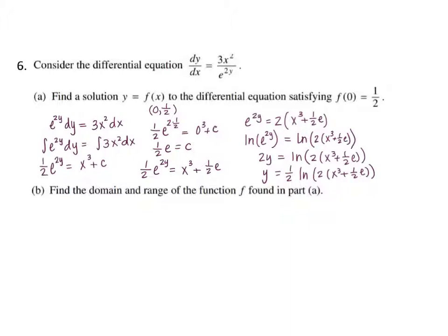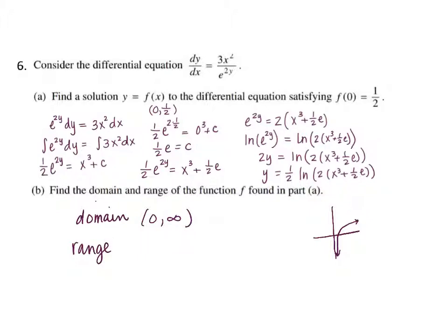For part B, it's wanting us to talk about the domain and range. Keep in mind the graph of a natural log — that graph does something like this. The domain is not going to be all real numbers. The domain is going to be from 0, not included, to infinity. The range for this function is going to be from negative infinity up to positive infinity.